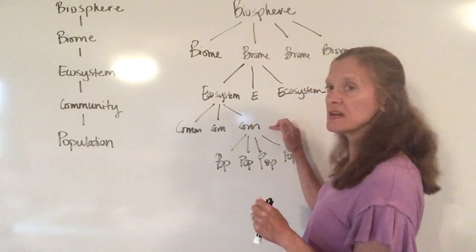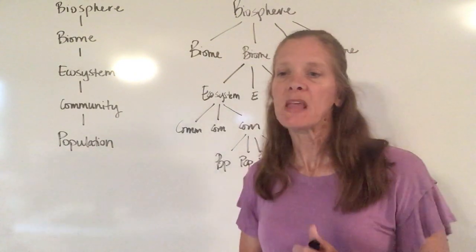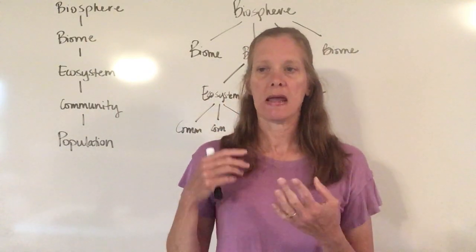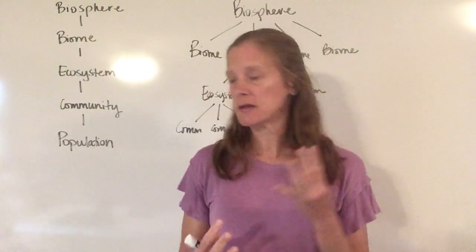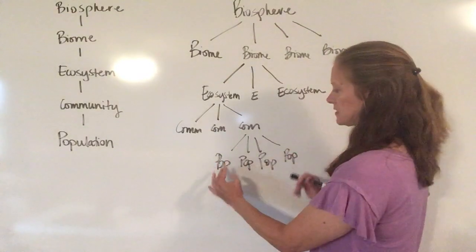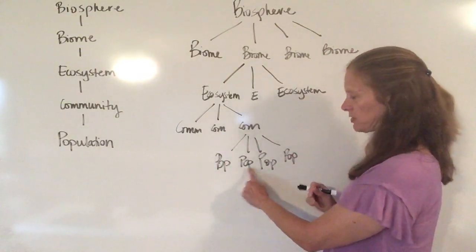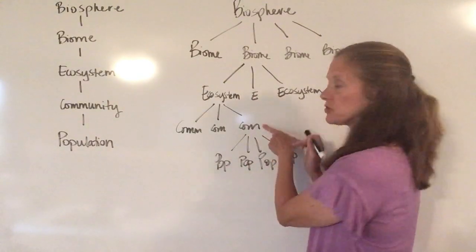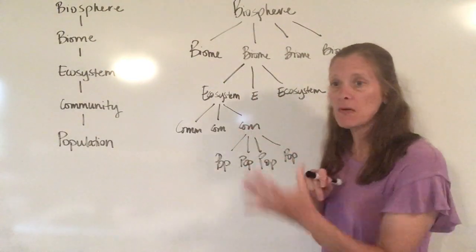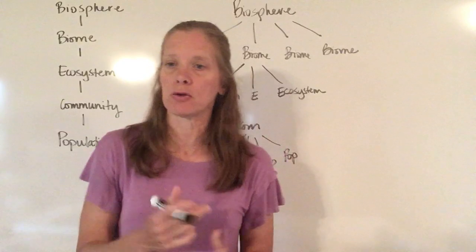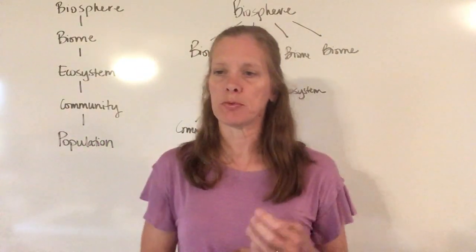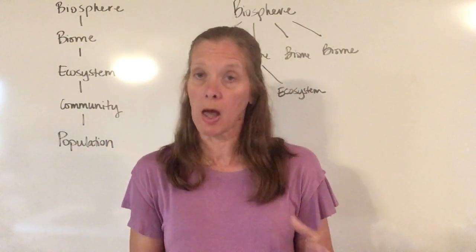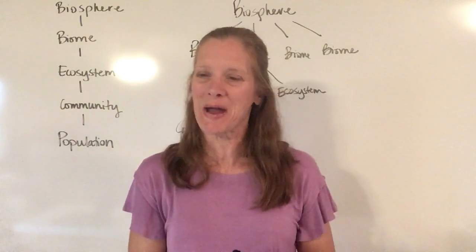If I move up to the next level — the community — now I have the wildebeests and the zebras and the hyenas and the lions all working together to make a community. Obviously all of those things are going to be interacting with each other. The zebras might not appreciate the type of interaction they have with the lions, but they still are going to be interacting with each other.